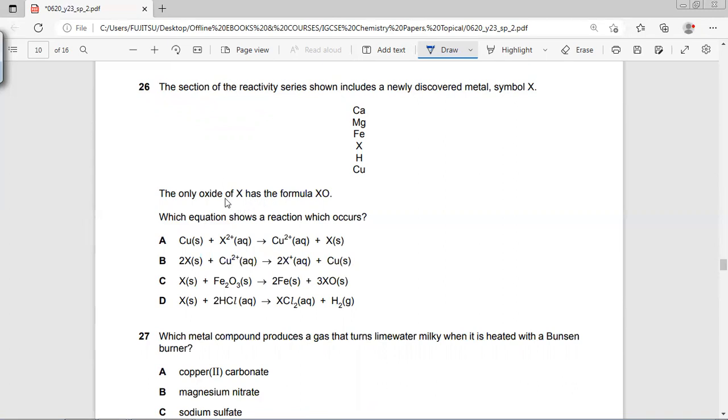The only oxide of X has the formula XO, so that means X has a charge of 2+. X should only have a charge of 2+.